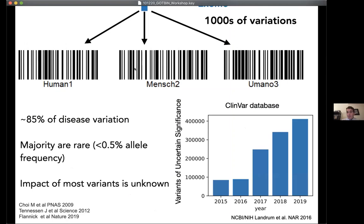The problem with this genetic variation is that, in particular in this small fraction of our genome, it harbors 85% of known disease variations. The majority of genetic variations are rare, with less than 0.5% frequency, and the impact of most of these variants is unknown.